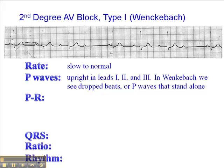In Wenckebach, what we see are dropped beats, or P-waves that stand alone. For example, we see a P-wave with a QRS, P-wave with a QRS, P-wave with a QRS, and here we have a P-wave that stands alone. There's no QRS following it, then another P-wave and QRS, and so on and so forth.